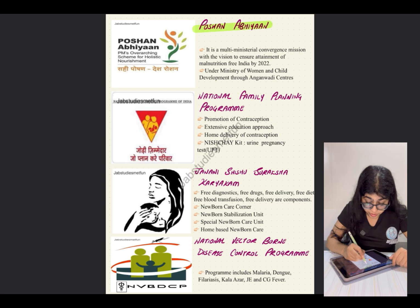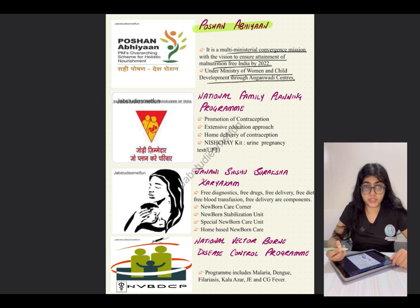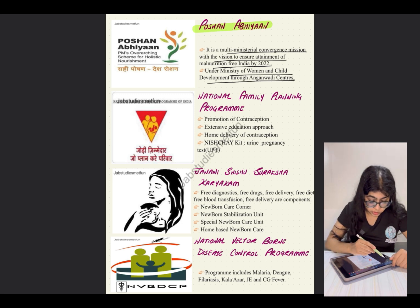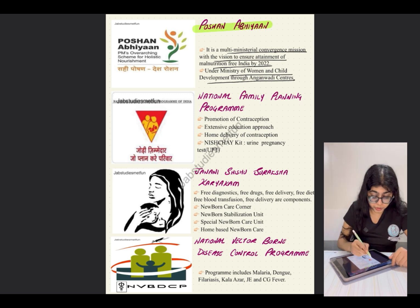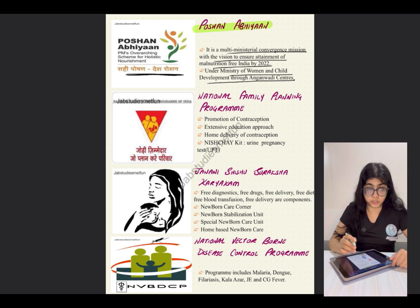POSHAN Abhiyan is the PM's Overarching Scheme for Holistic Nutrition. It is a multi-ministerial convergence mission with a vision to ensure attainment of a malnutrition-free India by 2022. It is under the Ministry of Women and Child Development through Anganwadi centers. The slogan is 'Sahi Poshan, Desh Roshan.'